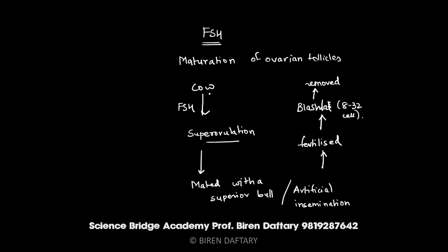To summarize so far: the cow was given a high dose of FSH, causing super ovulation where around 6 to 8 ova matured. That super-ovulating cow was then mated with a superior bull or artificially inseminated. The sperms fertilized almost all the ova, producing a large number of zygotes, which developed into blastulas at the 8 to 32 cell stage and were then removed from the female.